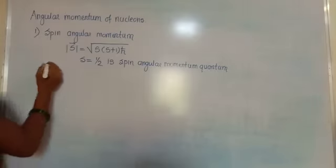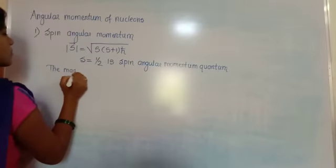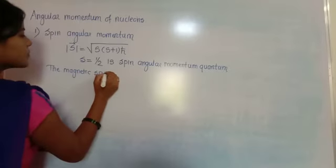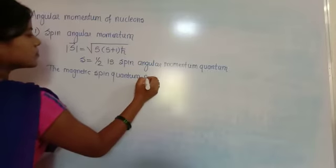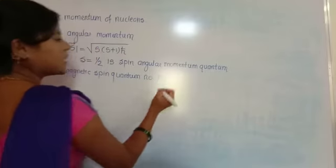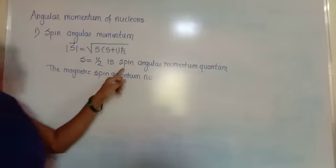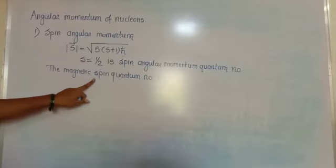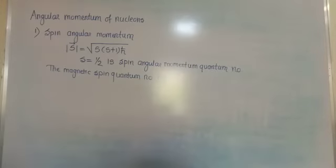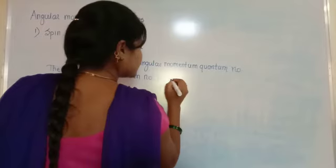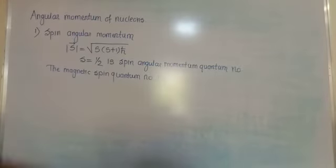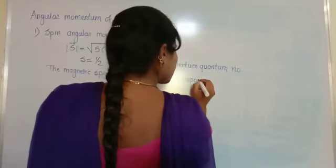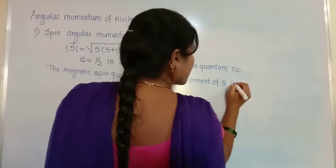The next concept is the magnetic spin quantum number, denoted by the letter m_s. This is the component of S in the specified quantization direction — that of the applied magnetic field, usually taken as the Z-axis.